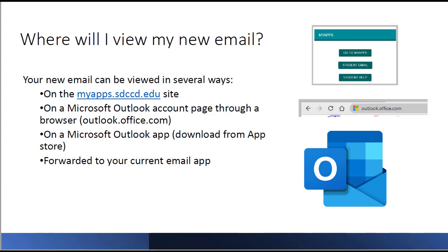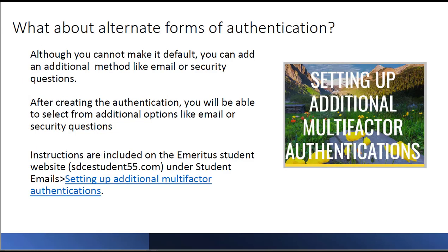There are a few different ways to view your email. You can go to the district site, or open any browser and type in outlook.office.com, or download the Microsoft Outlook app from the App Store. We'll also describe how to forward this SDCCD email to your personal email account. Currently the only forms of MFA available are the phone and the Microsoft Authenticator; however, after creating your authentication you can go back and select additional options like email or security questions. These instructions are on the emeritus student website sdcestudent55.com under the category student emails.